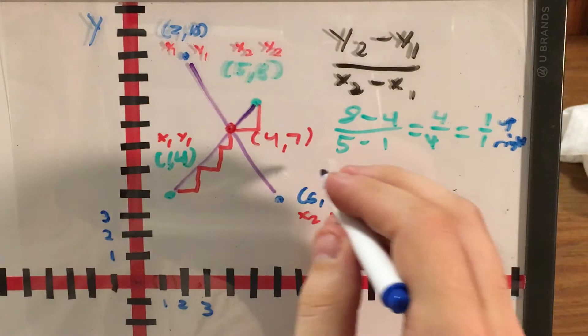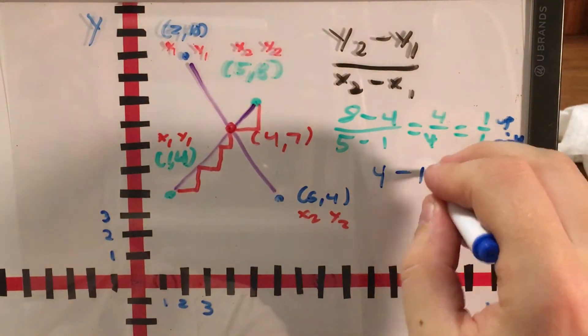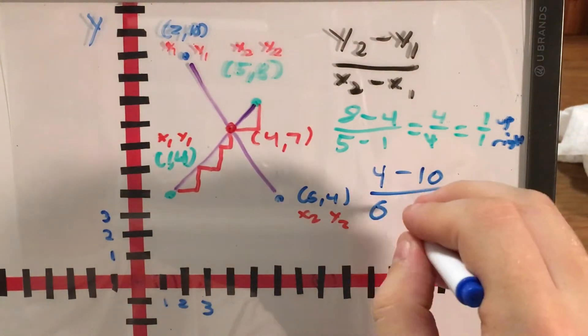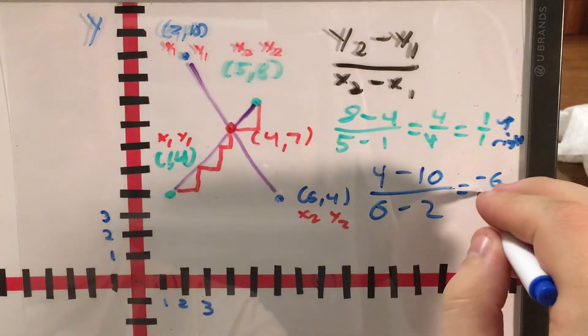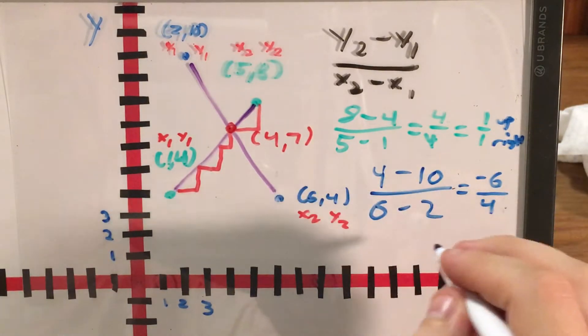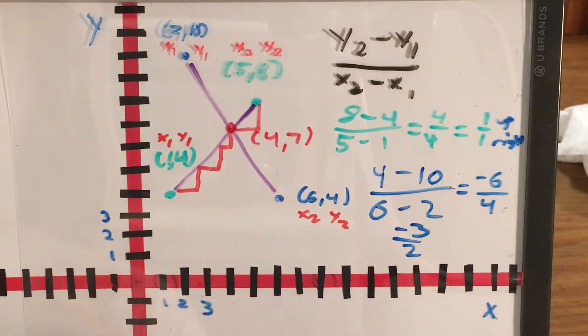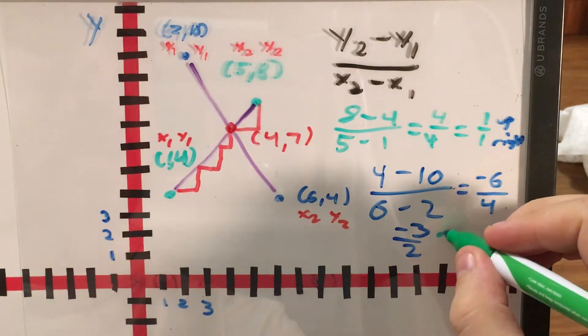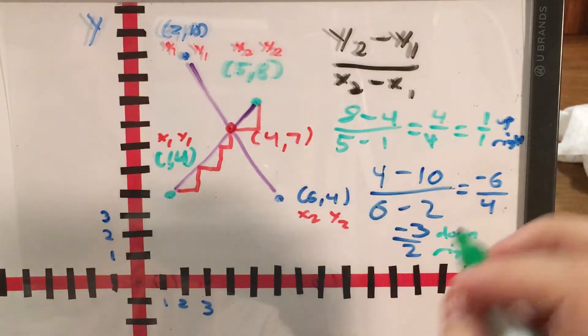So let me go ahead and plug our x's and y's in here. My y2 is 4, y1 is 10, x2 is 6, x1 is 2. 4 minus 10 is negative 6, 6 minus 2 is positive 4. And this can simplify into negative 3 over 2, which according to the way that I like to think about slope, tells me that I'm going 3 down for every 2 that I'm going right.